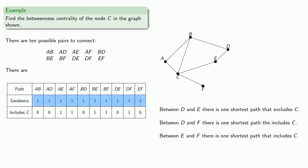So there are eleven geodesics, and C is on six of them. So the betweenness centrality of C is six elevenths.